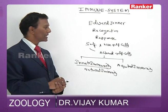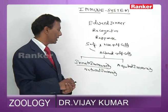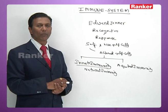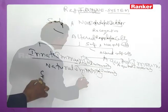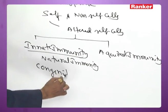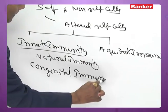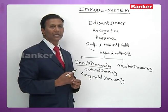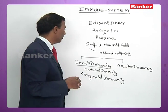Acquired immunity is again of two types: active acquired immunity and passive acquired immunity. Innate immunity, also called natural immunity, inborn immunity, or congenital immunity, is accomplished by various methods.